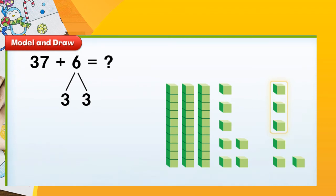Let's look at an example of model and draw. Let's break apart ones to make a tens number when we add. Here you can see the sum is 37 plus 6. Look at the ones digit in the number 37. How many more ones are needed to make 37 a tens number? 3 more ones are needed to make 37 a tens number.